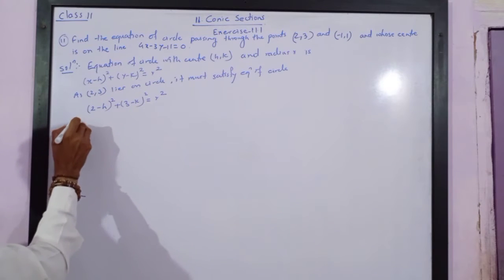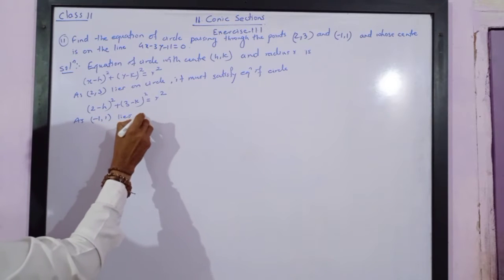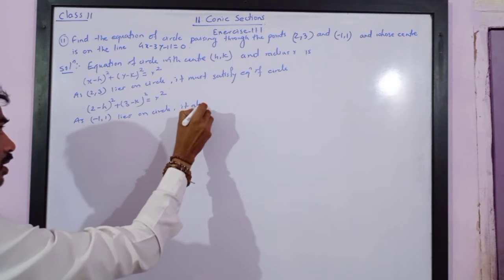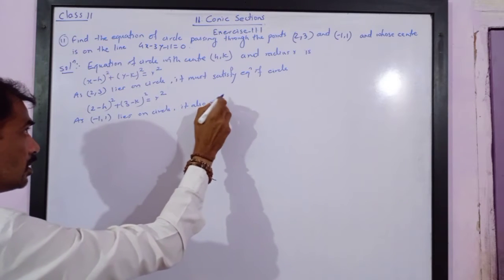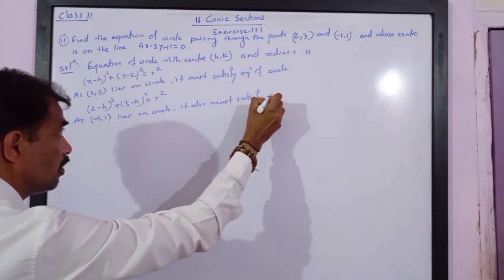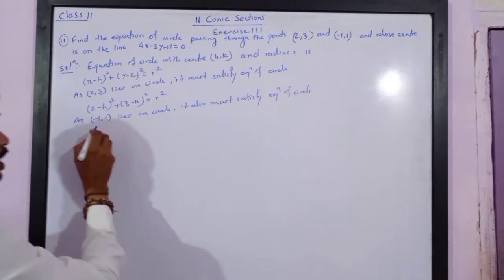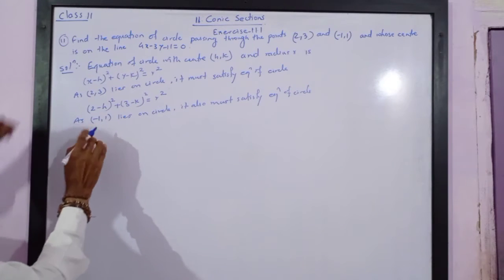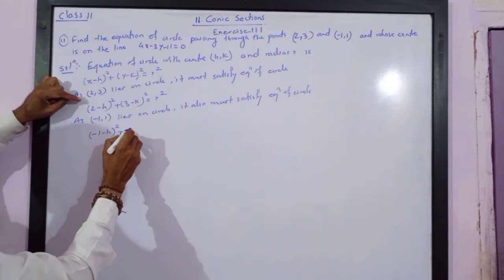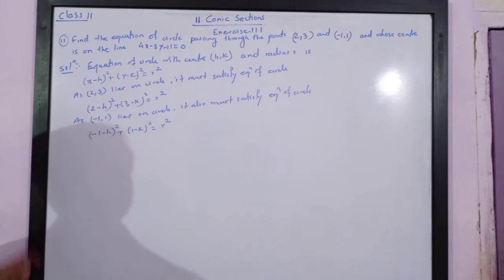Not only this — the second point (-1, 1) also lies on the circle, so it must also satisfy the equation of the circle. This gives us: (minus 1 minus h) bracket squared plus (1 minus k) bracket squared is equal to r squared. This will be Equation 2.